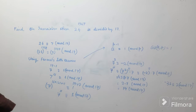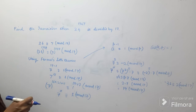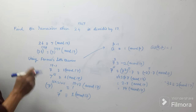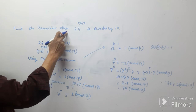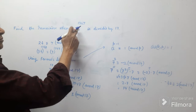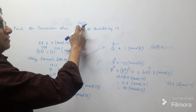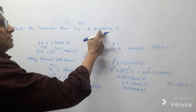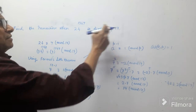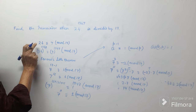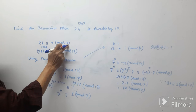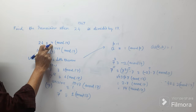Dear students, here again see the power of congruency. Find the remainder when 24 to the power 1947 is divided by 17. So very simply, when 24 is divided by 17 then we get remainder 7.